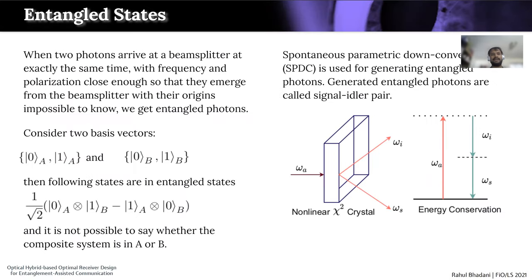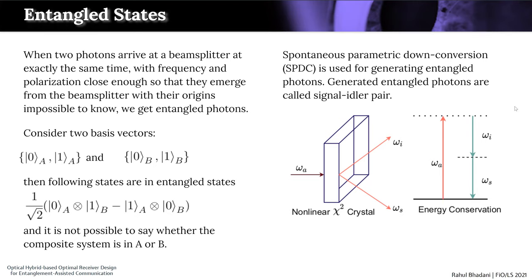Entangled states are at the heart of entanglement assisted communication. When two photons arrive at a beam splitter at exactly the same time with frequency and polarization close enough so that they emerge from the beam splitter with their origin impossible to know, we get entangled photons. Consider two basis vectors a and b; if we have a composite state and it is impossible to determine whether they are in a or b, then we have an entangled state. We use spontaneous parametric down conversion for generation of entangled photons. For historical reasons the entangled photons are called a signal-idler pair, and we use a non-linear chi-squared crystal for the generation of such photons.